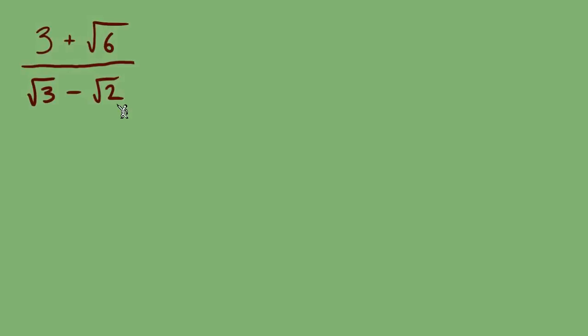So now we have to rationalize the denominator. Observe that there are two terms, therefore we have to use the conjugate. We use radical 3 with radical 2 but we're changing our minus into a plus.